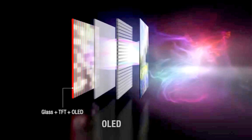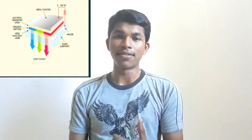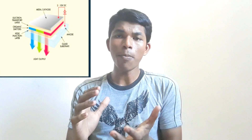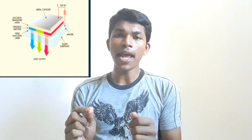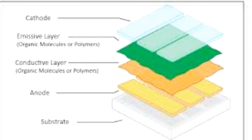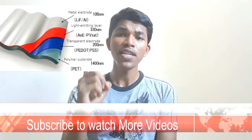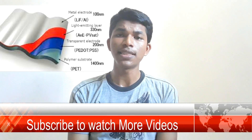OLED — an organic light emitting diode — is a light emitting diode in which the emissive electroluminescent layer is a film of organic compound that emits light in response to an electric current. This layer of organic semiconductor is situated between two electrodes, and typically at least one of these electrodes is transparent.